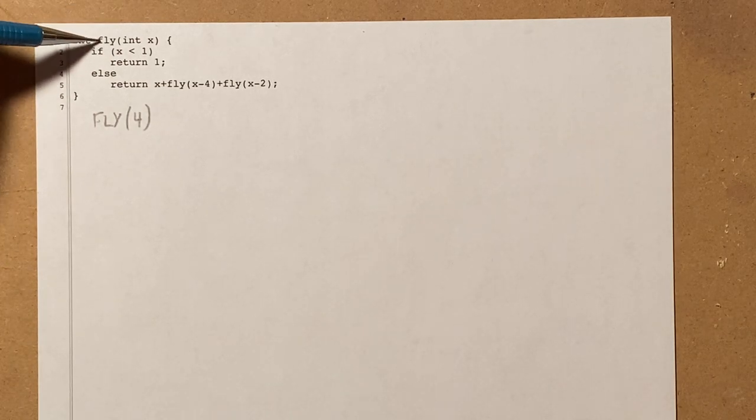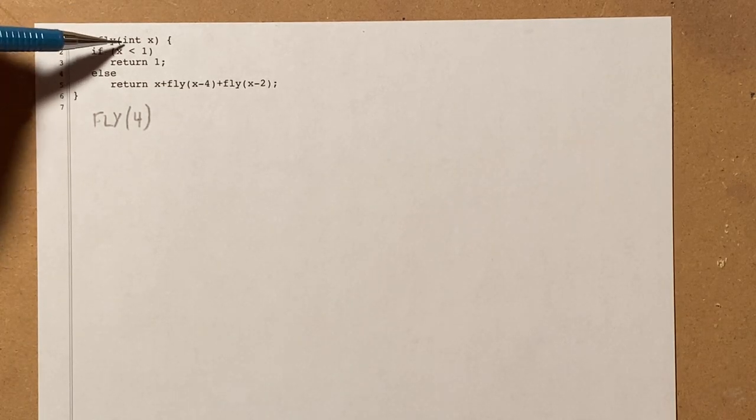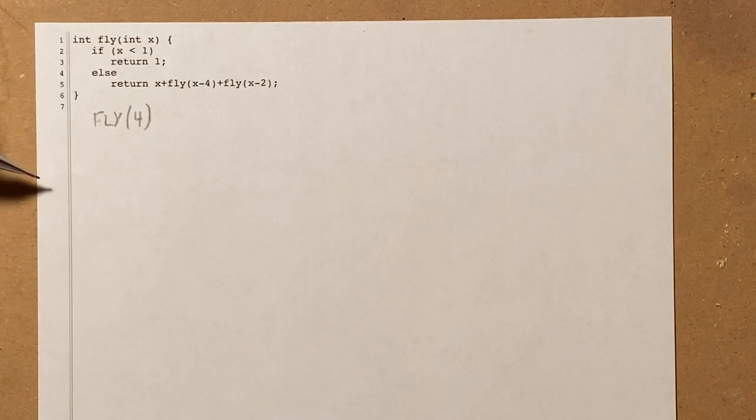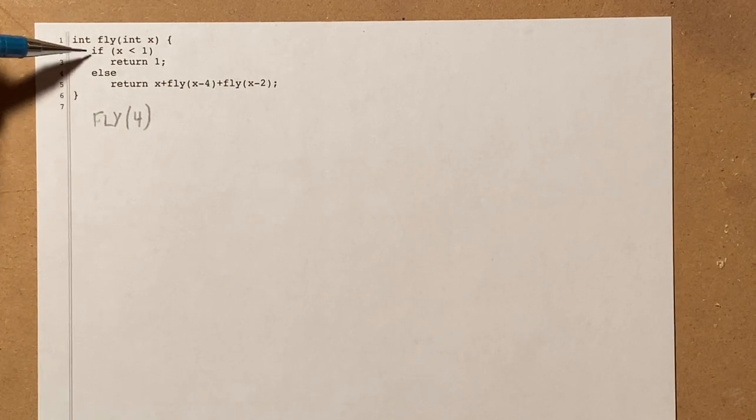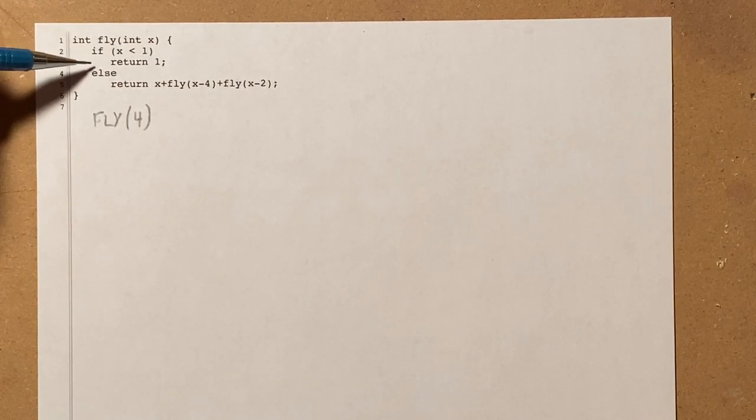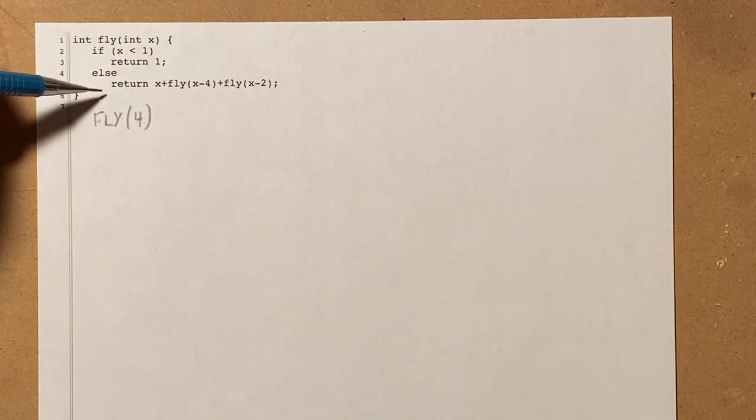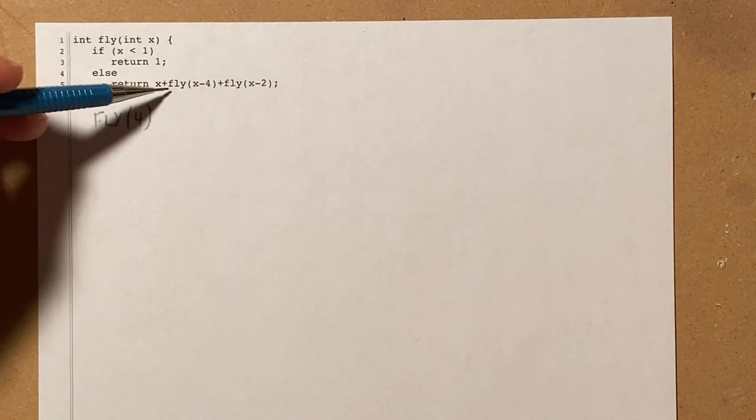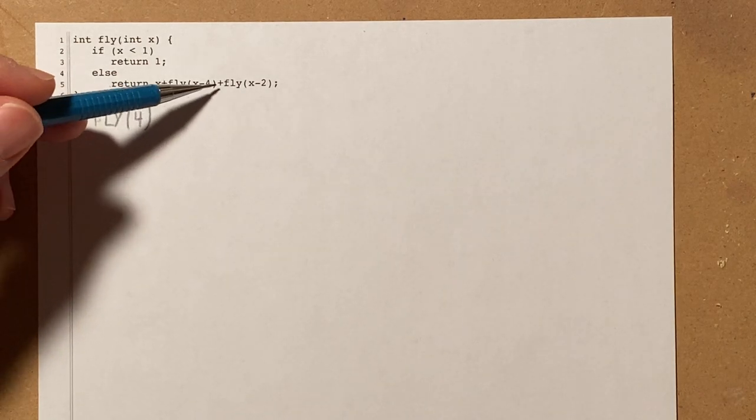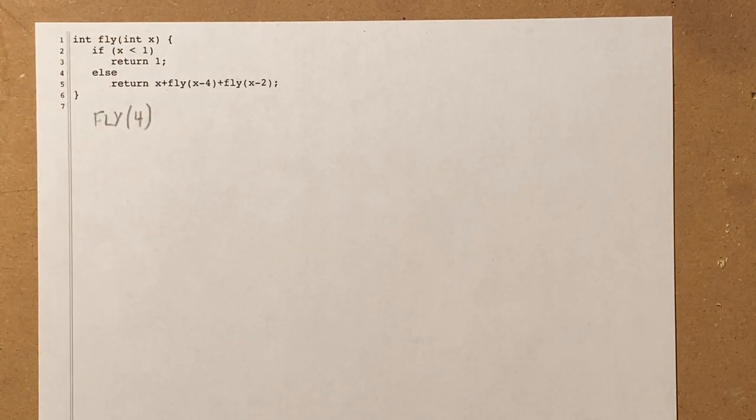So here's another recursive method, fly. It takes one parameter that's an integer called x. You'll notice that it's similar in some ways. It still has a terminating condition if x is less than 1, return 1. But then this is a little bit more complicated. You'll see in the else branch, it says return x plus fly of x minus 4 plus fly of x minus 2.